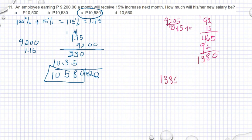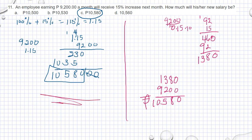So if I have 1,380 plus 9,200, 8, 5, 10,580 also. So it depends how you will solve it. Either this way or this way or this way, you will get the same answer.